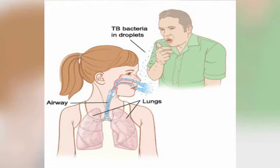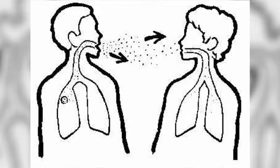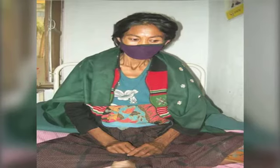Most people don't know when the TB bacteria infected their body. The TB bacteria can spread to people living with a sick TB person, meaning a person with active TB. When the person sick with TB coughs, the TB bacteria travels through the air to other people. Many infections spread this way. This is why the doctor often has sick, coughing people wear a mask — we try to stop infections from spreading to others.